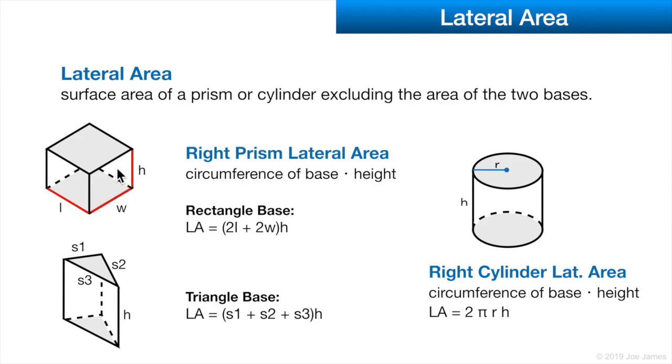The surface area of the four sides added together, and the way we calculate that is by calculating the circumference of the base times the height. For a rectangular base with length, width, and height, the lateral area is (2L + 2W) × h. Why? The circumference of the base is L here, W, then L on this side, and W on this side. So it's 2Ls and 2Ws, the circumference of this base rectangle, and then we multiply by the height. The same thing for a triangular base: the circumference is side 1 + side 2 + side 3, and we multiply it by the height. Circumference of the base times the height gives you the lateral area.